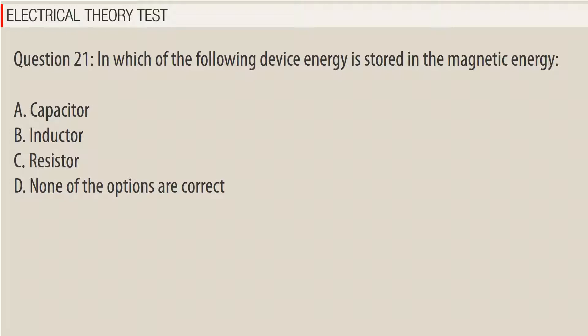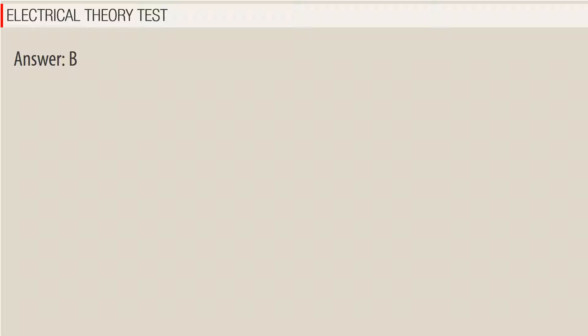Question 21. In which of the following devices is energy stored in magnetic form? a. Capacitor. b. Inductor. c. Resistor. d. None of the options are correct. Answer: B.